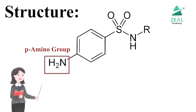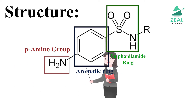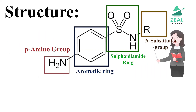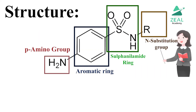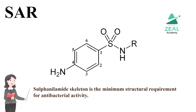Regarding the chemistry of sulfonamides' structure, it consists of a para-amino group, an aromatic ring, a sulfonamide group, and an N1 substitution group. The sulfonamide skeleton is the minimum structural requirement for antibacterial activity.